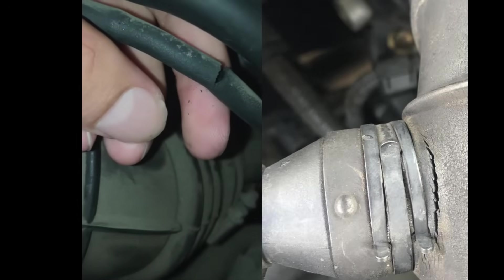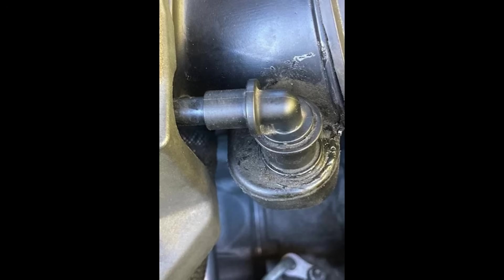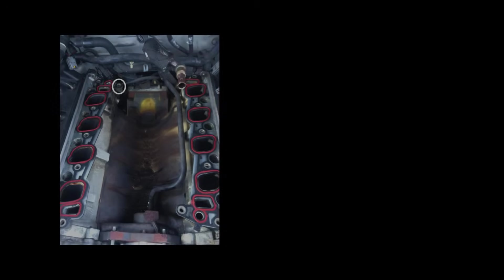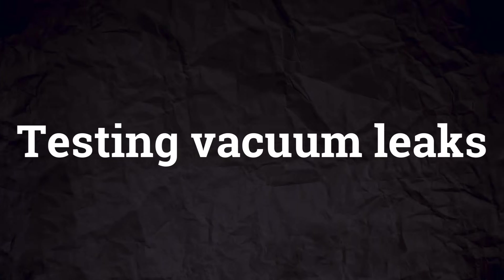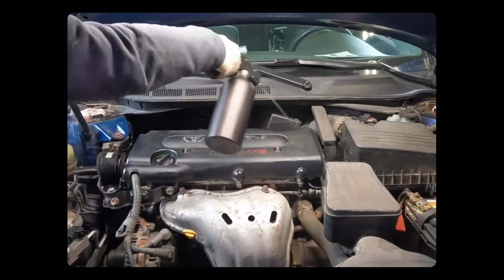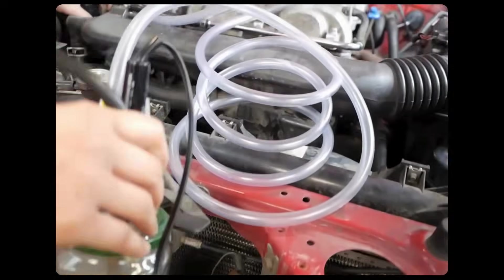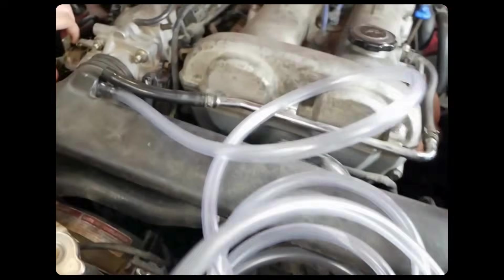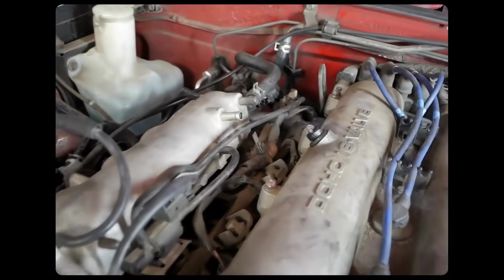Vacuum leaks are caused by cracked or loose vacuum hoses, a faulty PCV valve, or leaks in the intake manifold or throttle body gaskets. To test for vacuum leaks, you can spray brake cleaner on the engine bay and observe if the RPM changes. You can also use aerosol smoke to create a visible stream and identify leaks.